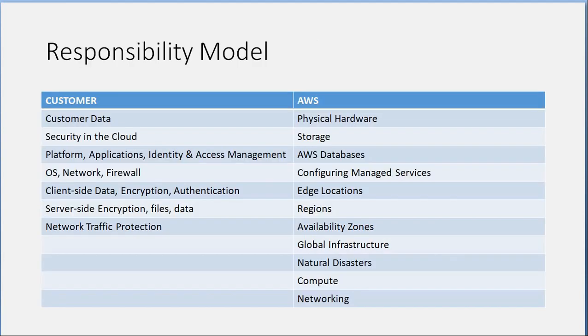The Shared Responsibility Model: The customer is responsible for customer data, security in the cloud, platform applications, identity and access management, OS, network firewall, client-side data encryption, authentication, server-side encryption, files, data, and network traffic protection. AWS is responsible for physical hardware, storage, AWS databases, configuring managed services, edge locations, regions, availability zones, and global infrastructure.